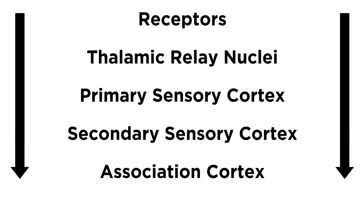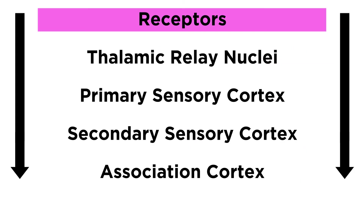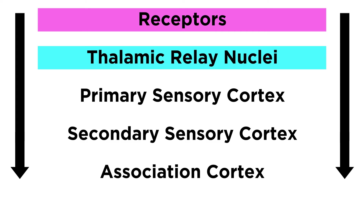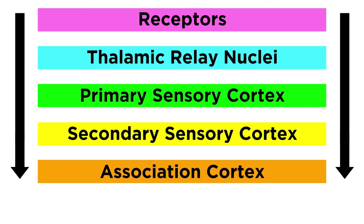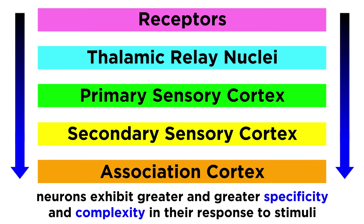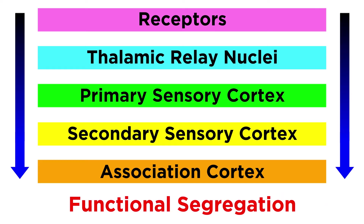We can show this in a more general way, going from receptors to some thalamic relay nuclei, to a primary sensory cortex, then secondary, finishing up at an association cortex. As information travels through this pathway, the neurons exhibit greater specificity and complexity in their response to stimuli, demonstrating functional segregation, where each tier performs different kinds of analysis.